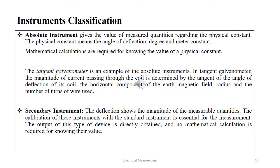An absolute instrument gives the value of measured quantities regarding physical constants such as the angle of deflection, degree and meter constant. Mathematical calculations are required for knowing the value of a physical constant. The tangent galvanometer is an example of the absolute instrument. In a tangent galvanometer, the magnitude of current passing through the coil is determined by the tangent of the angle of deflection of the coil. The horizontal component of the Earth's magnetic field, the radius and the number of turns of wire are all important factors.